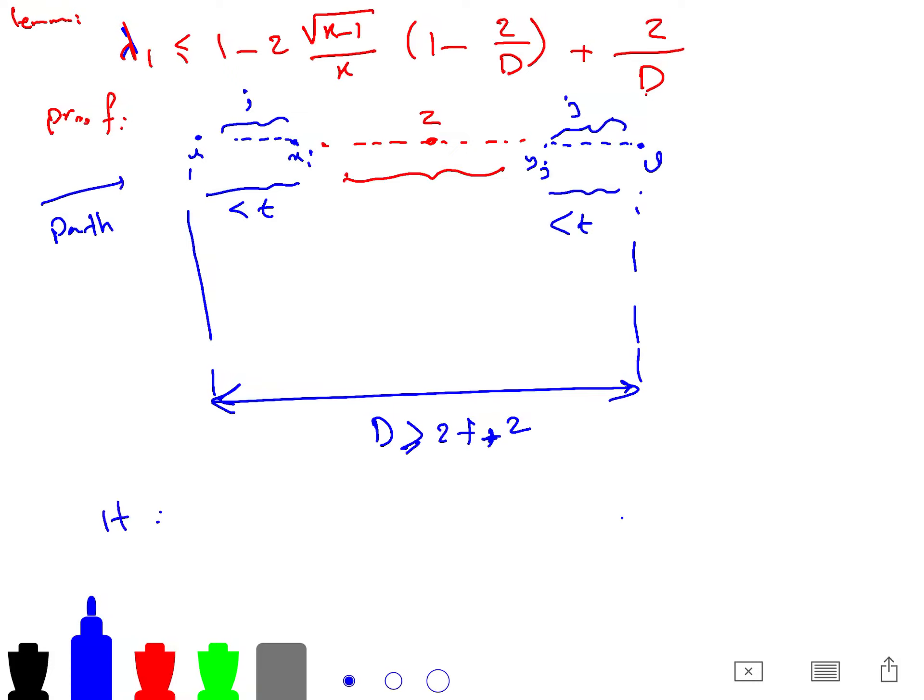So your path graph is just x0, x1, up to x_t, and then z, and then y_t, and then y2, y1, y0. So this is your path. And you know that eigenvalue of this path, because it is a contracted version of g, is greater than the eigenvalue of original graph.